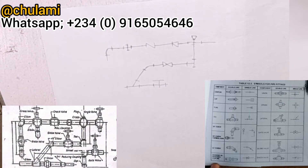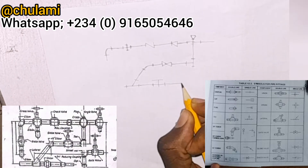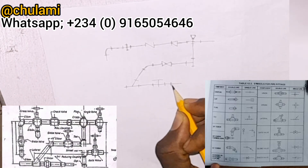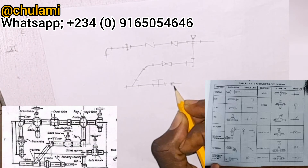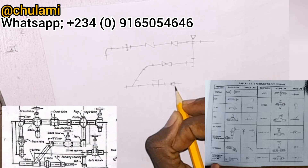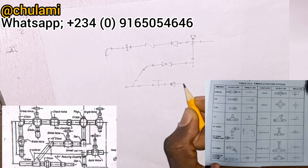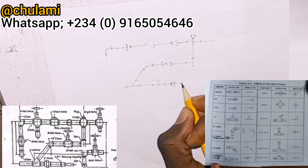Now you will have a reducing coupling cap — the symbol for the reducing coupling is drawn like this — and then we end the connection here.